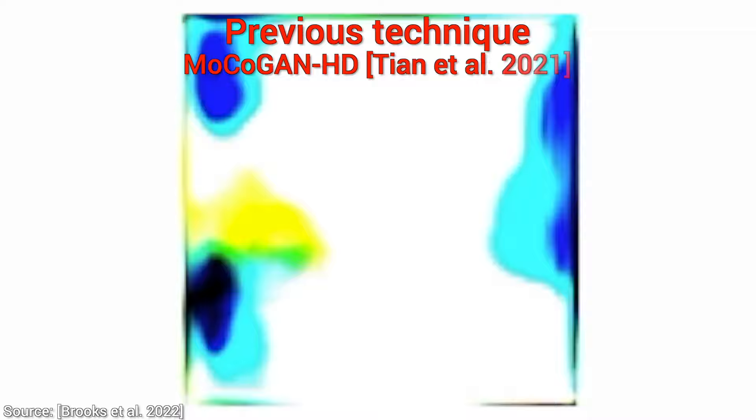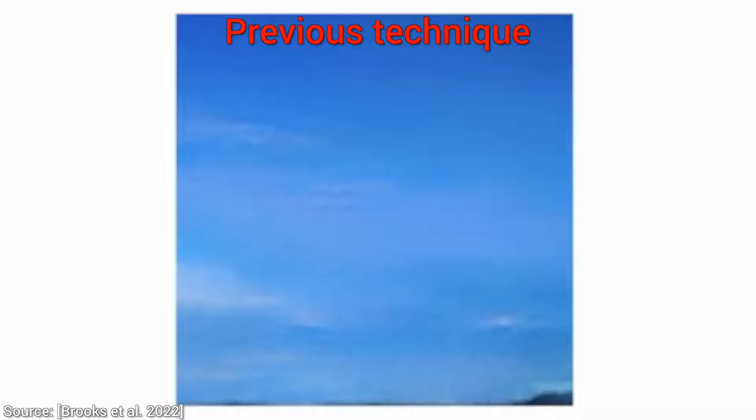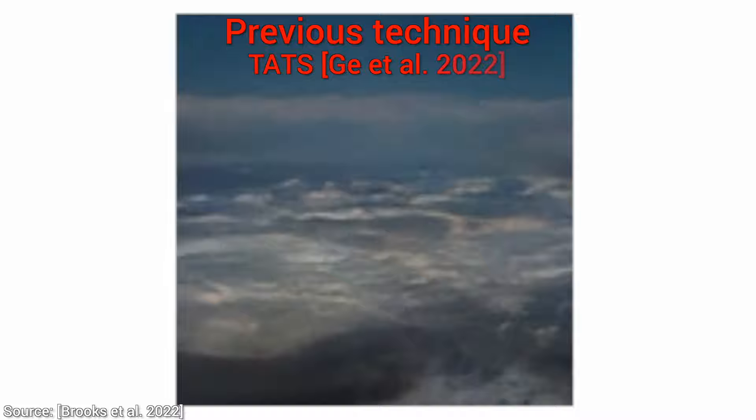MoCoGAN HD is a technique from 2021 — from just two years ago — and we cannot even tell what it is trying to do. Here is a later work from 2022, the time-agnostic, time-sensitive transformer — TATS in short.